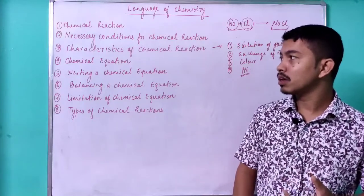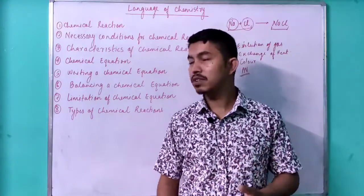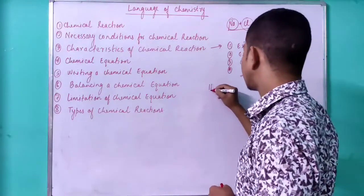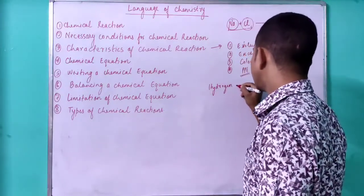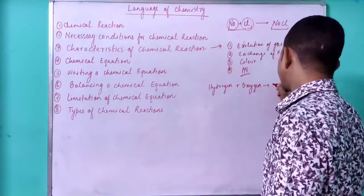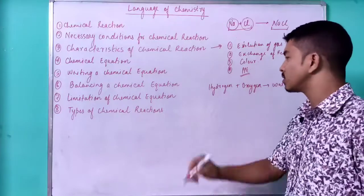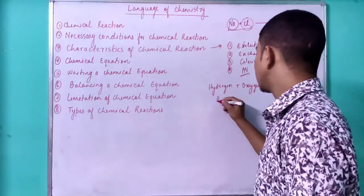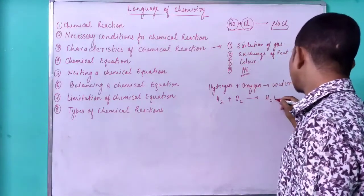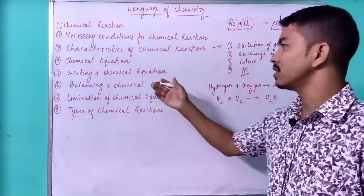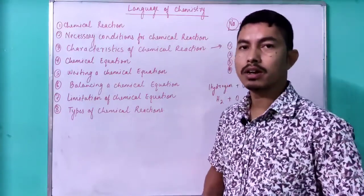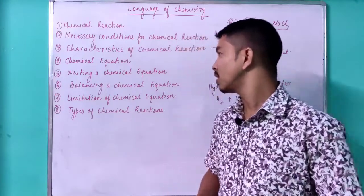What is a chemical equation? The chemical equation is the symbolic representation of a chemical reaction. For example, hydrogen reacts with oxygen to give water. If we write it in symbolic representation — hydrogen reacts with oxygen to produce water — that form is known as a chemical equation.